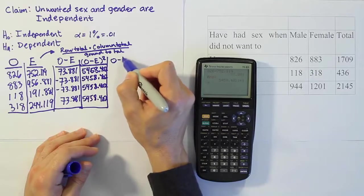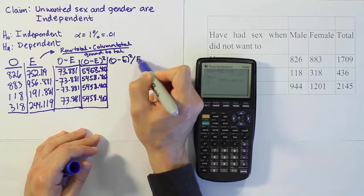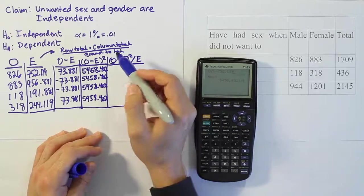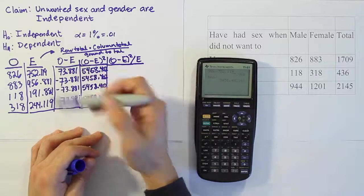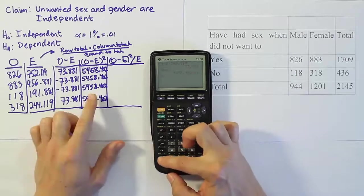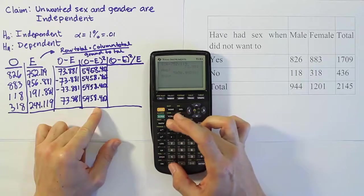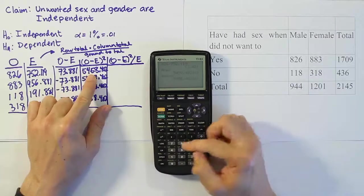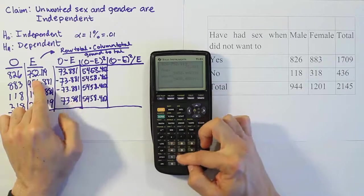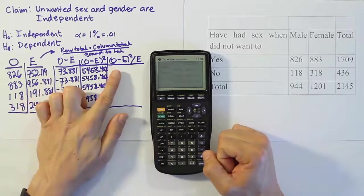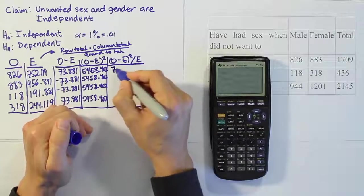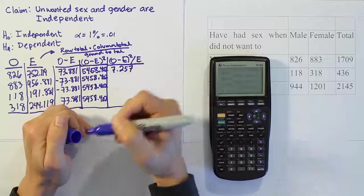The next column is the big one, the important one. The observed minus expected squared divided by the expected value. This gives us our chi-square test statistic when we're done. What we have to do is literally do the value here divided by the expected value across the way. That number 5458.402 is the same for each cell, so I'm just going to store it in my calculator as x. It's going to be 5458 divided by 752.119. And we get the answer 7.257.